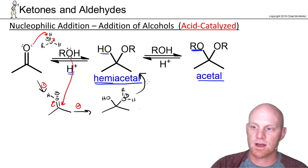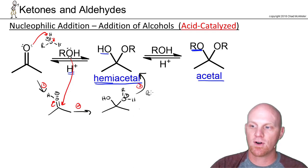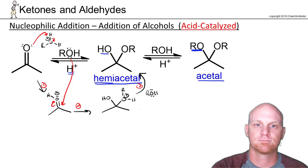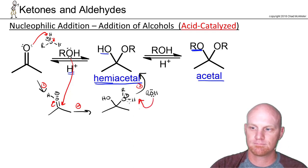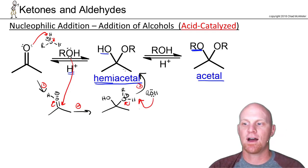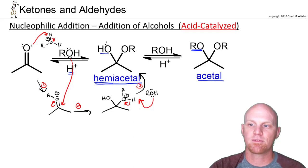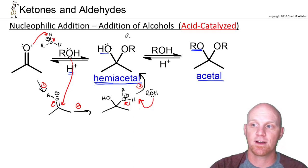Step three is deprotonation. In all likelihood, another molecule of the alcohol comes and does this, and that gets us to our hemiacetal. Now, if we want to go all the way to the acetal, we take this a step further. We protonate the OH again — probably from another molecule of our protonated alcohol, maybe even the one just formed.